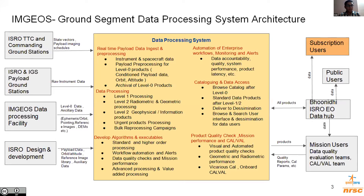The generated data products go through automated and visual quality checks for assessing the radiometric and geometric fidelity of the data products. The qualified data products are finally catalogued and disseminated to users through various dissemination modes. There is also a subscription model of data dissemination where systematic coverage of a user's area of interest is disseminated to them. There is also Bhoonidi, which is ISRO's data dissemination hub — a web application. An enterprise monitor and alert generation software monitors the entire system's performance, processing latencies, creates accountability reports, and generates automatic alerts in case any anomaly is noted.